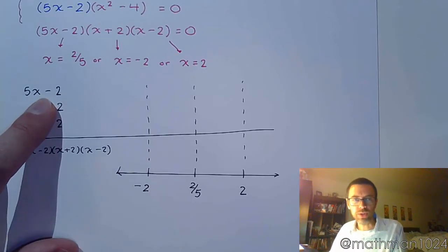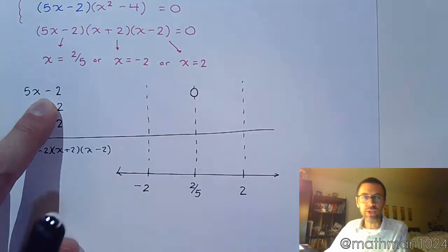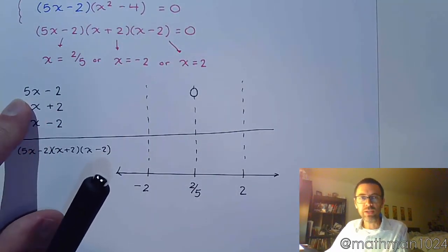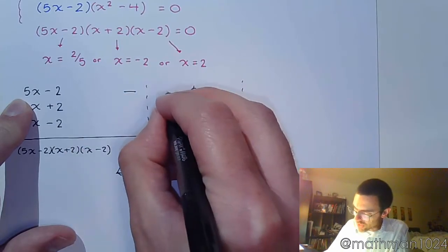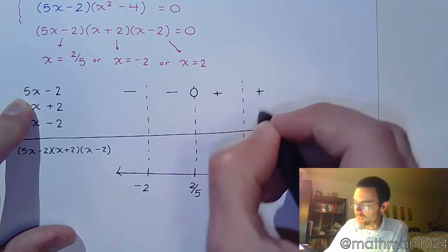So 5x - 2 has a critical value at 2/5. So he's going to be 0 there. Since we have a positive lead coefficient, he's going to be negative on the left side of this, and he's going to be positive for every region to the right of that.